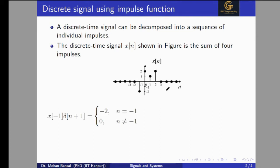First we will see the impulse value or magnitude of the impulse at n equal to minus one, which is minus two. That can be represented by x(-1)·δ(n+1). Here δ(n+1) is representing the location of the impulse in the given signal, and x(-1) is representing the magnitude value of that particular impulse.